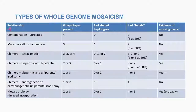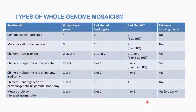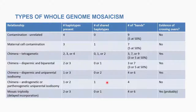When looking at types of whole genome mosaicism, you can assess how many haplotypes are present, how many patterns are present across each chromosome, how many bands there are, and whether there is evidence of crossing over. Based on the number of haplotypes and presence of crossing over, you can narrow down to the various types of whole genome mosaicism.